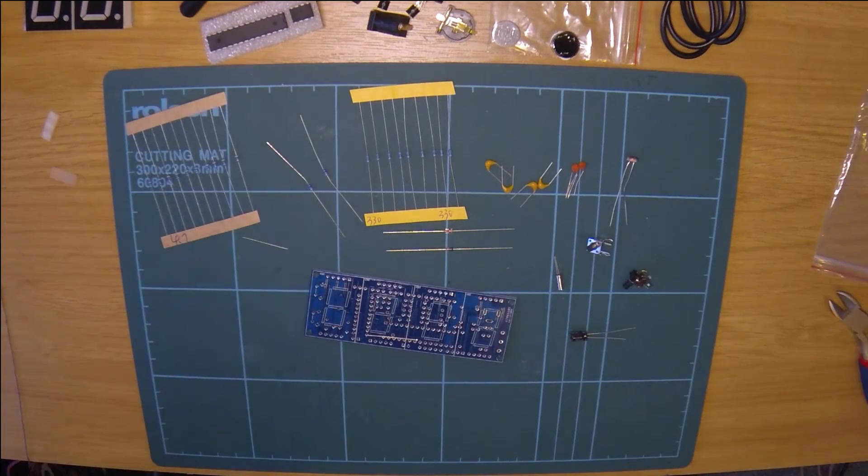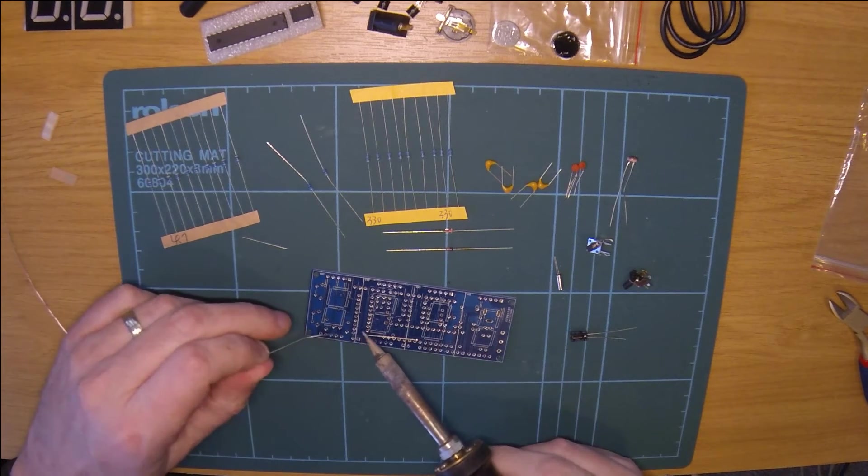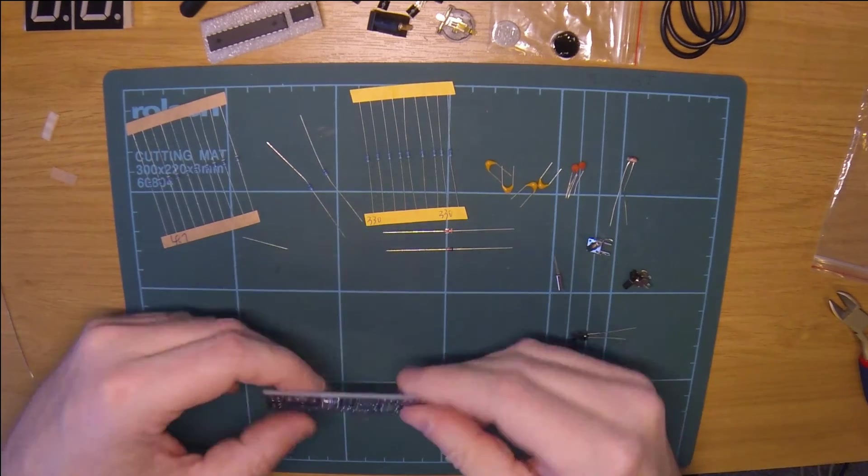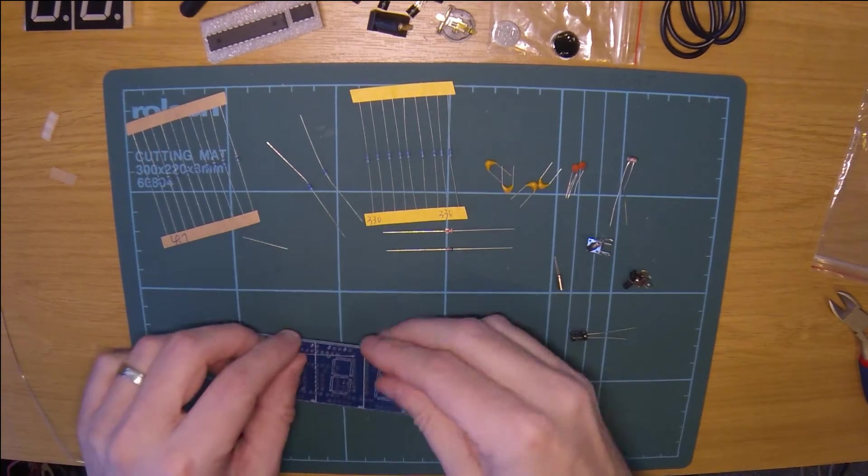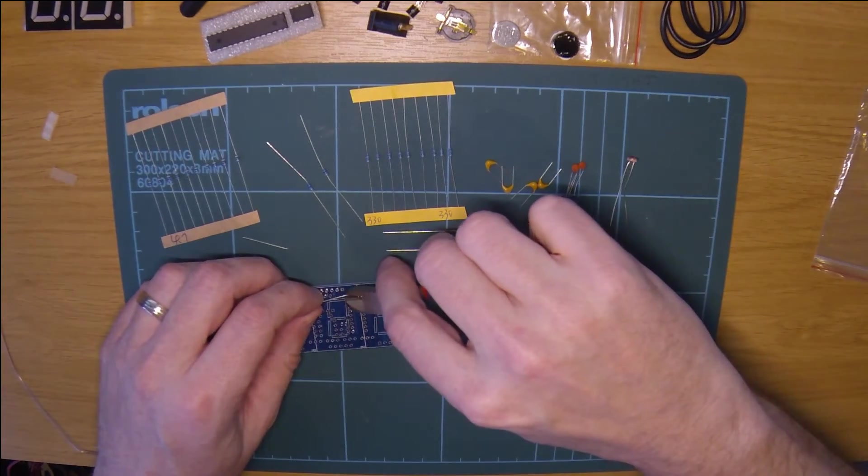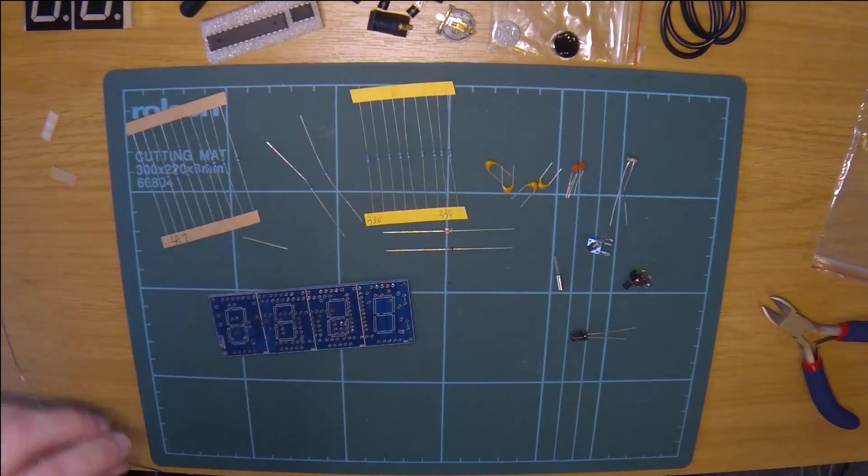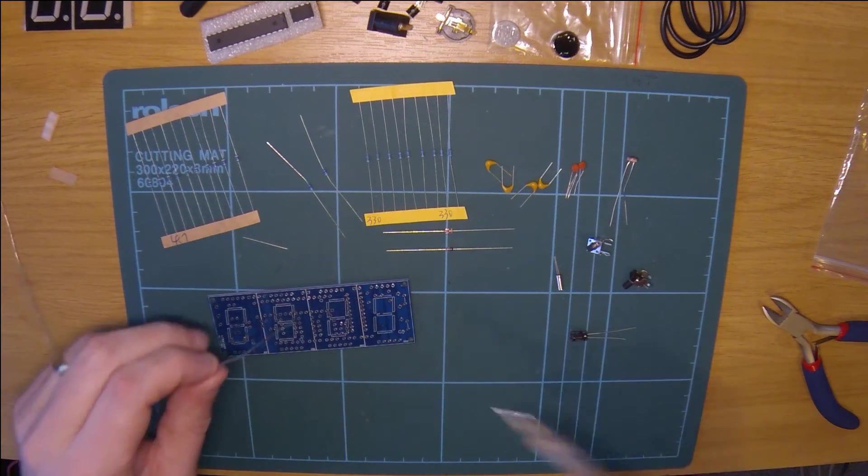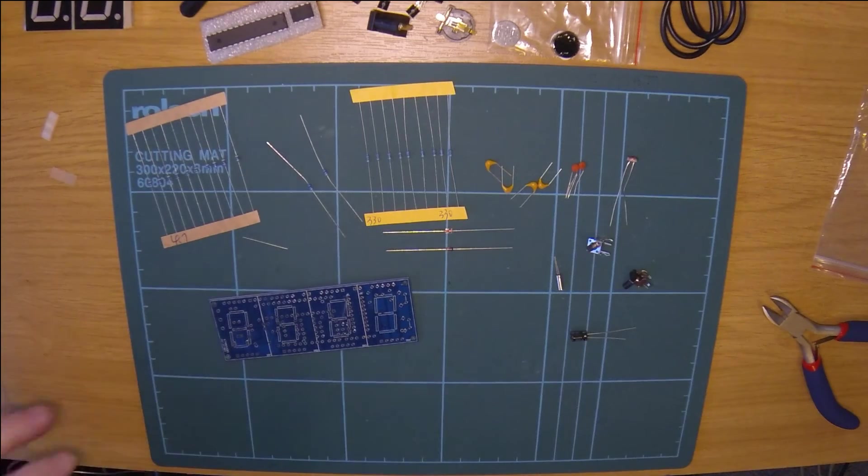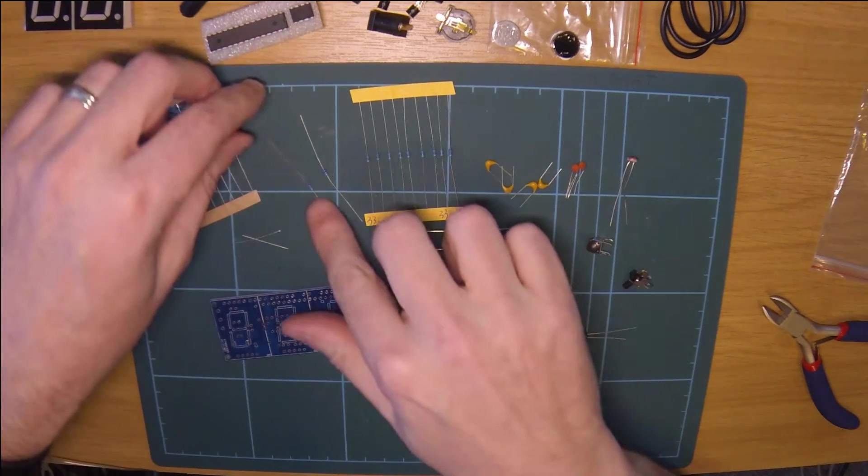That's one. So we solder one, keep it in place. So that I can cut and solder the other one. Takes a little while to do this. But that's what it's about. If you buy a kit, that's why you want to buy it, to actually build it. So that's one.